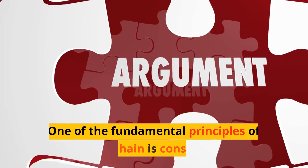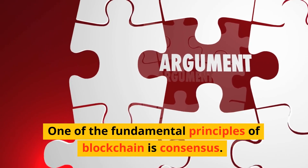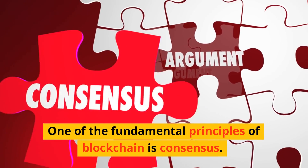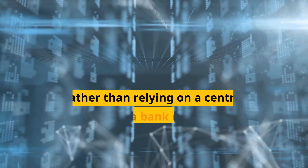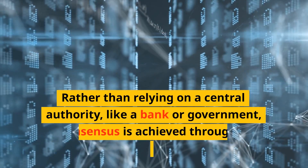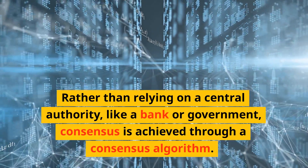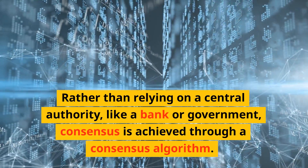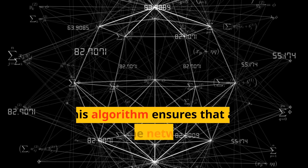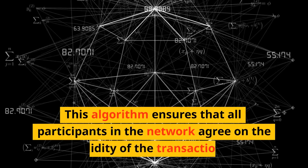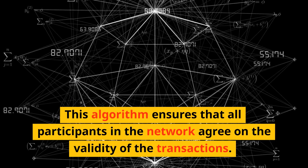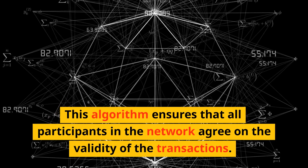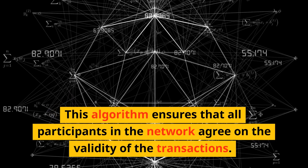One of the fundamental principles of blockchain is consensus. Rather than relying on a central authority like a bank or government, consensus is achieved through a consensus algorithm. This algorithm ensures that all participants in the network agree on the validity of the transactions.